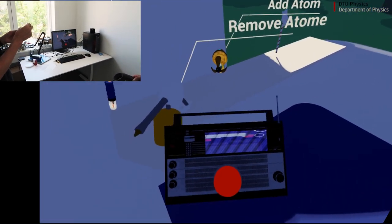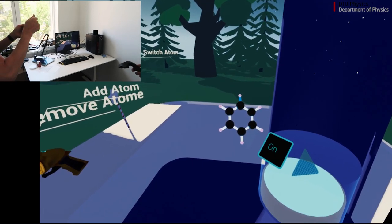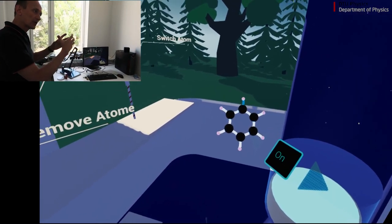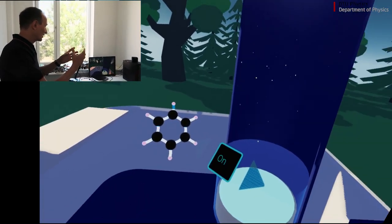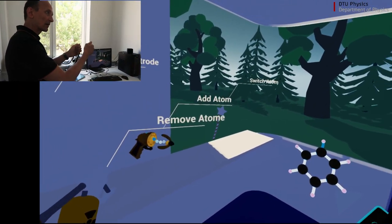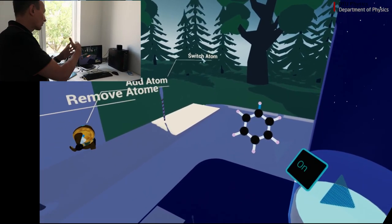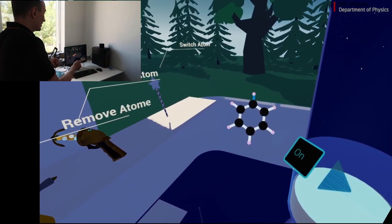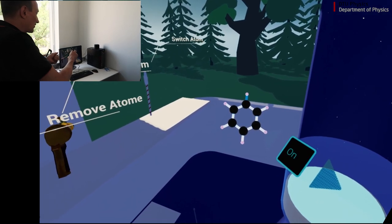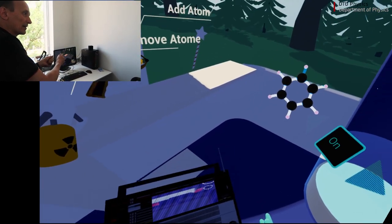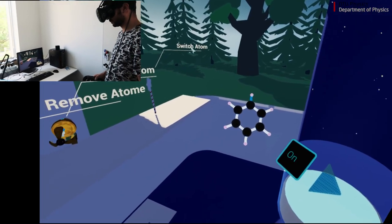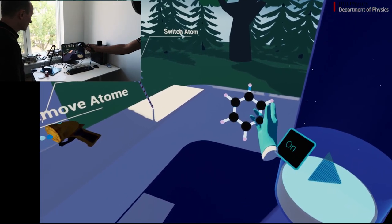So by minimizing energy, you mean that if the bonds are stretched too much or too little, then it will try to get all the chemical bonds to have their natural length. Exactly. And that is the point where the whole system has the lowest total energy. So lowering the energy means that all the springs are allowed to find their natural zero point.